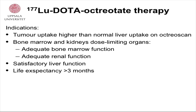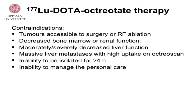Indications for PRRT: you must have tumor uptake higher than normal liver uptake on your scan. The bone marrow and kidneys are the dose-limiting organs, so you must have acceptable function of the bone marrow, kidneys, and also the liver. Life expectancy of more than three months is required. Contraindications include tumors accessible to surgery or radiofrequency ablation, decreased bone marrow, renal, or liver function, and patients with massive liver metastasis with high uptake — there is a risk for severe liver dysfunction. You must also be able to be isolated for 24 hours and care for your own personal needs.